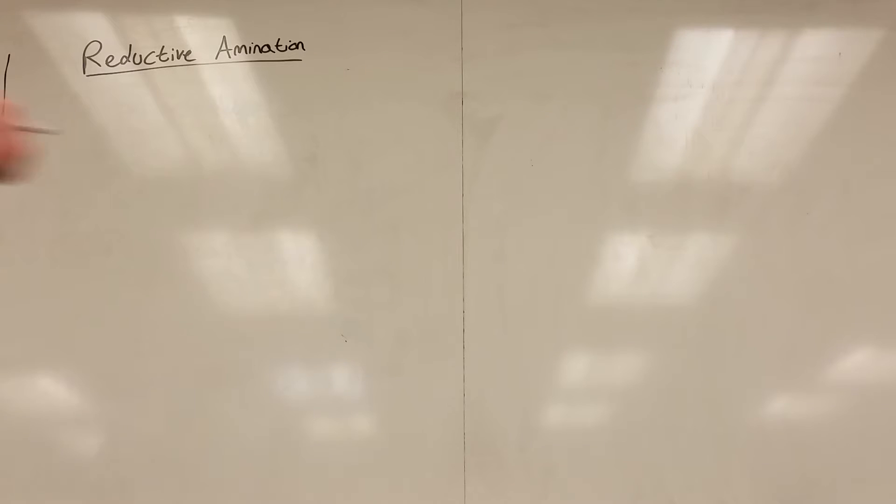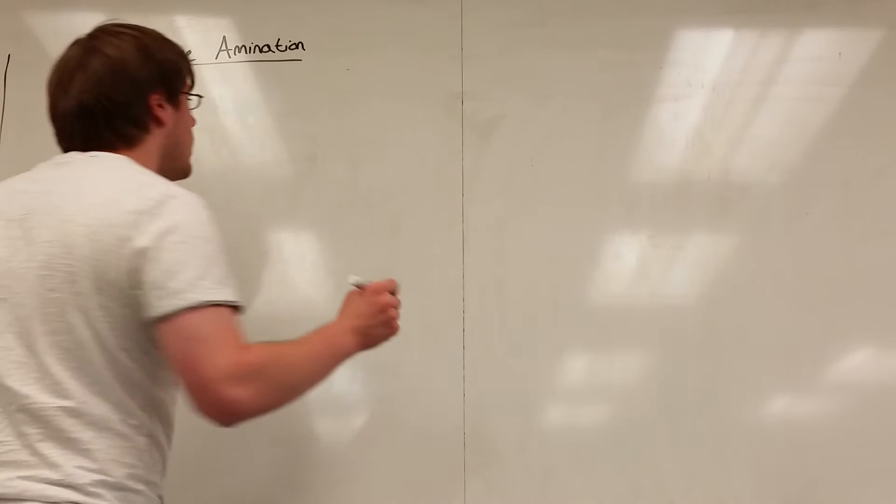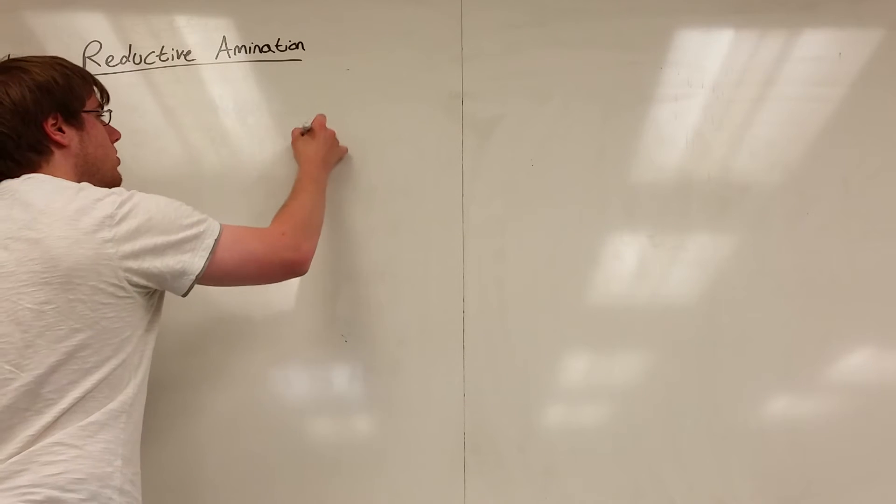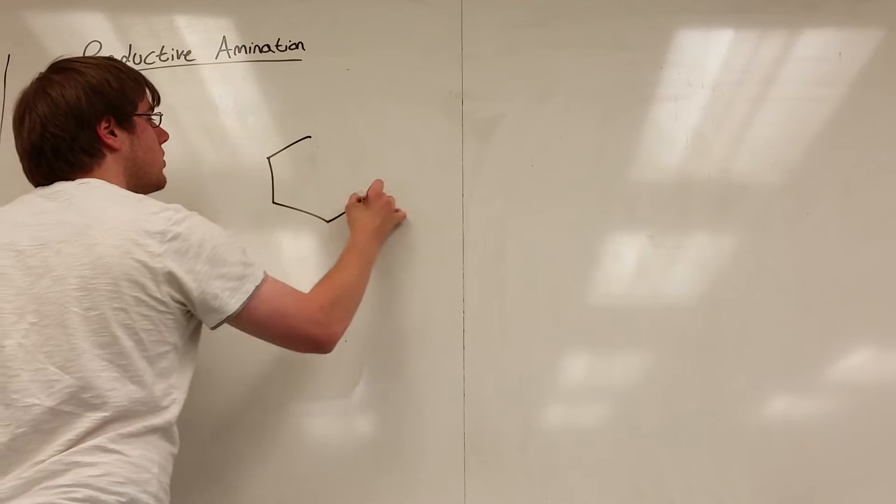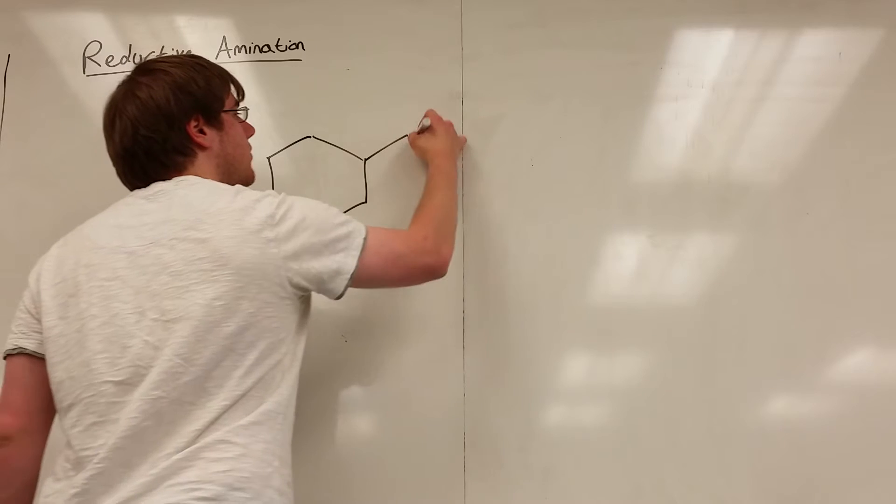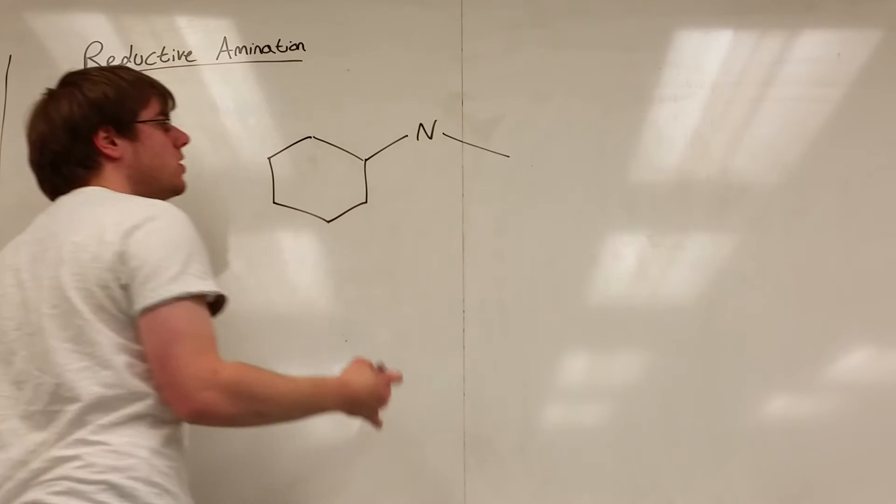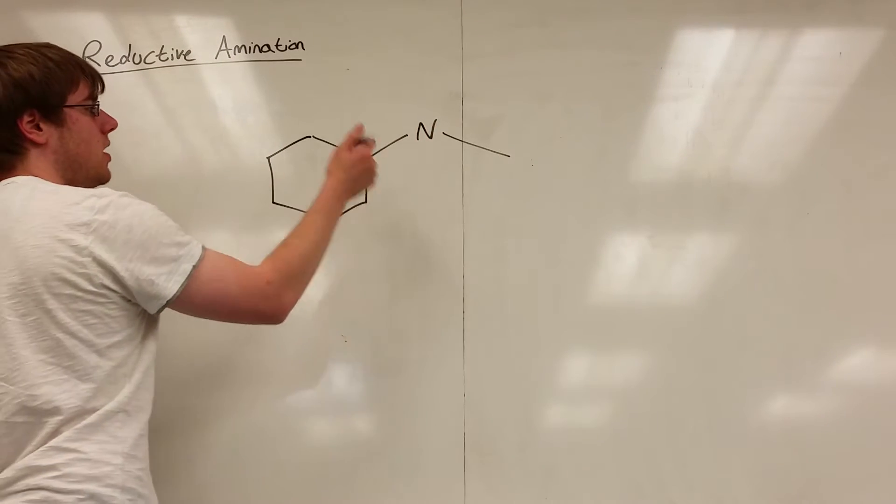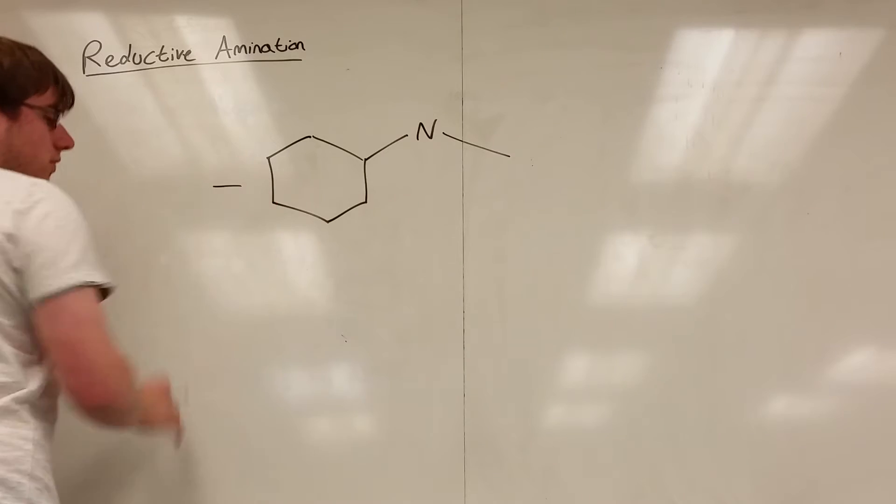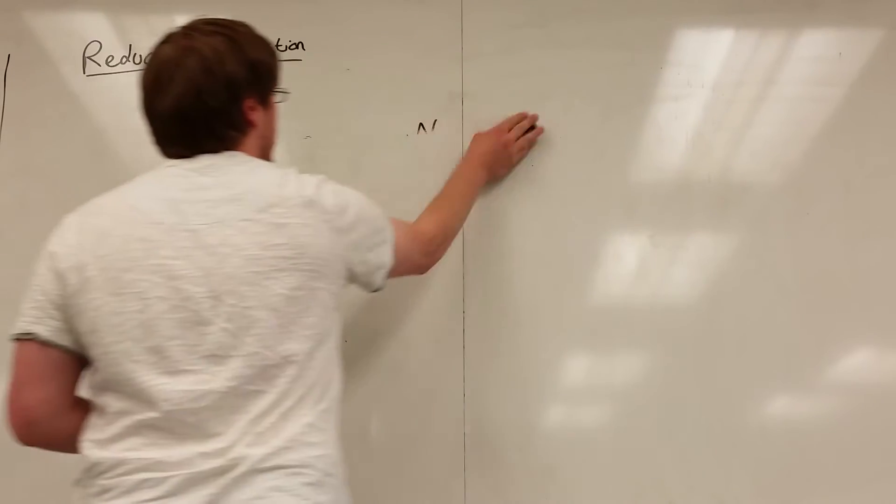So reductive amination is a big part of exam 3 synthesis and what it allows you to do is create carbon chains that have nitrogens on them. So for example, if I want to attach a nitrogen to a carbon chain, how do we do that?